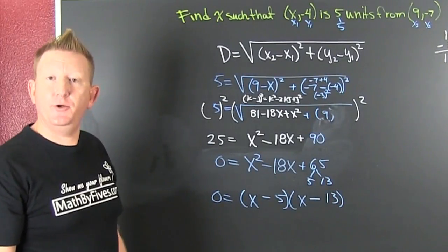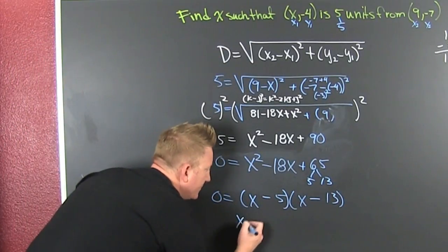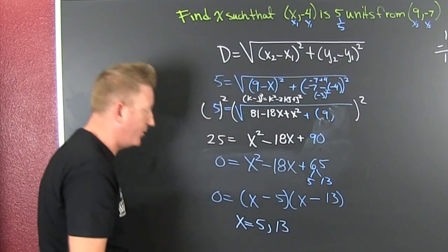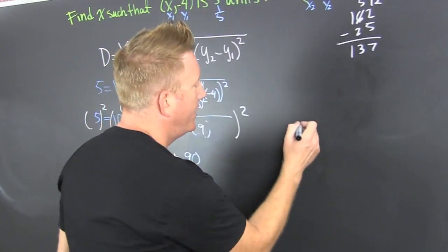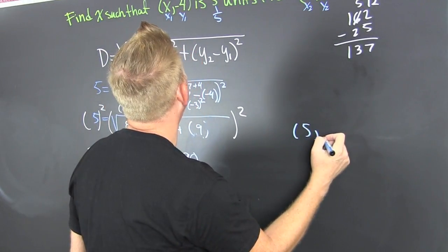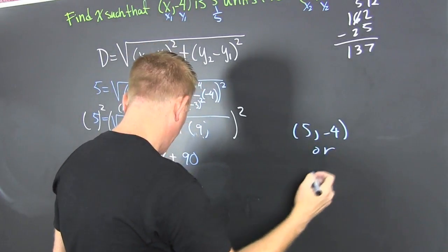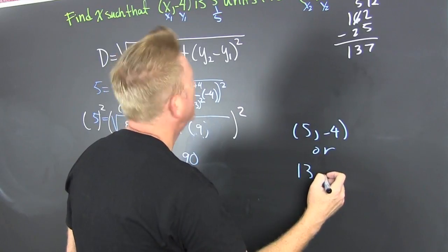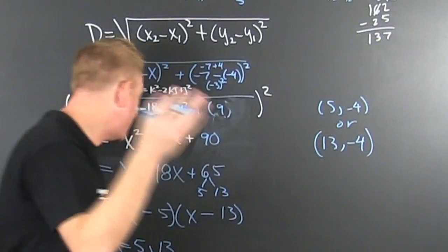Now, turns out there's two points that are five units away. Looks like X could be five or 13. So, what are my two points? That kind of points to the point five comma minus four or the point 13 minus four. Sure. Now, let's check it.